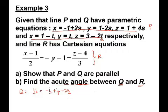Before this, we already found Q. Line Q vector is V2, which is negative I plus J minus 2K. And from our Cartesian equation of line R, we have the vector. Assume that vector 3 is equal to...